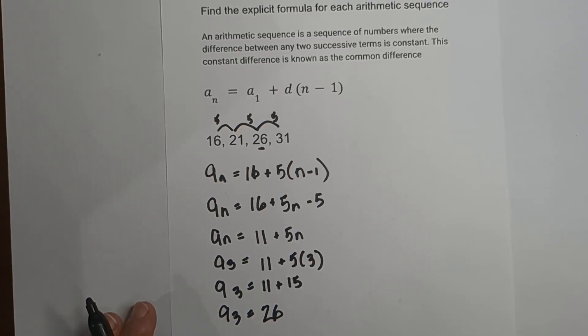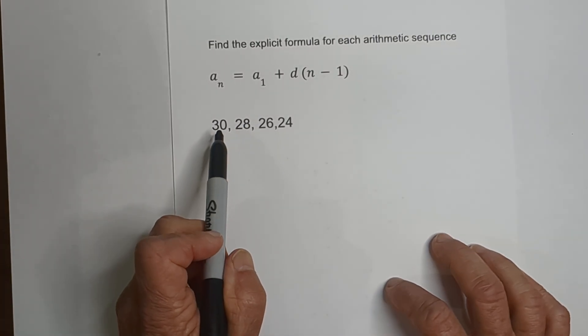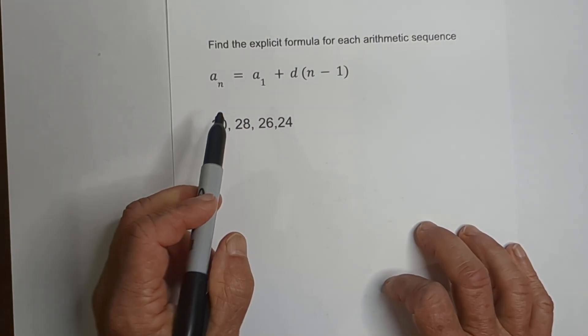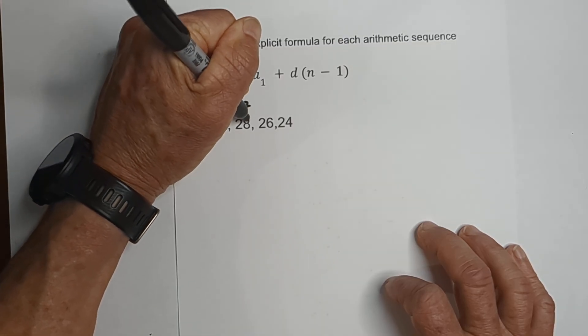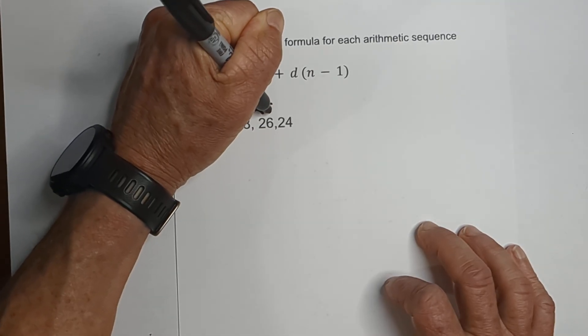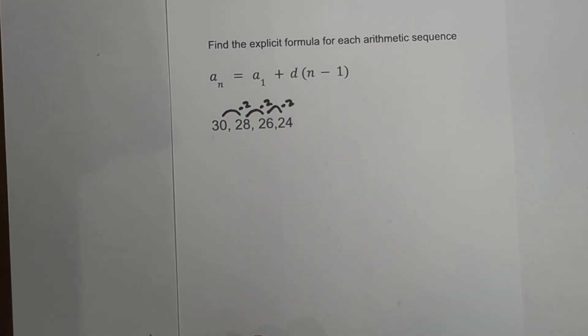Let's work another example. Let's look at this example: 30, 28, 26, 24. If you notice, each time it is going down by negative 2. Notice that it is a negative 2.